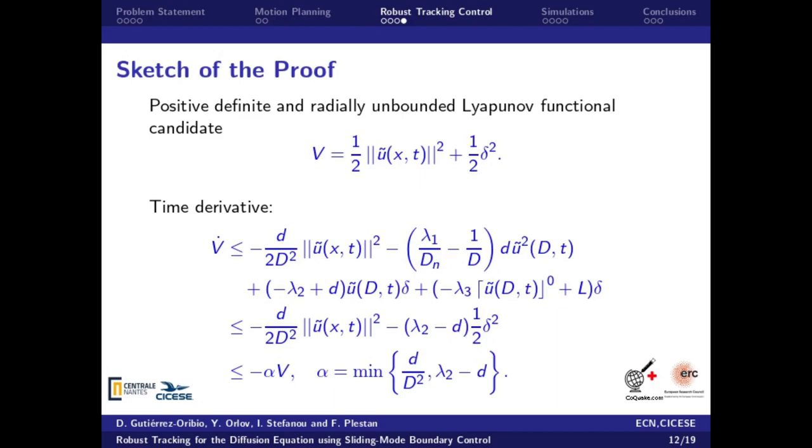its time derivative shows an exponential stability of the error trajectories, with the convergence rate depending on the system parameters and on the control gains.